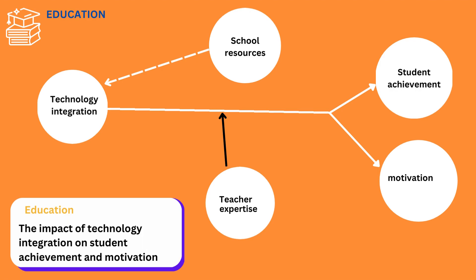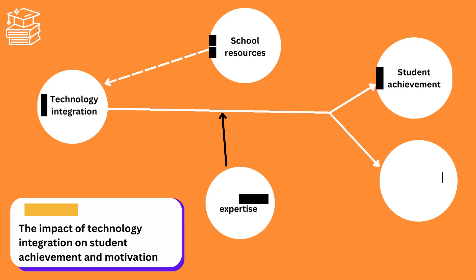In this educational study, we investigate the influence of technology integration on student success and motivation, taking into account the moderating effect of teacher expertise, and controlling for school resources. The independent variable, technology integration, has a direct impact on student achievement and motivation. Teacher expertise moderates the relationship between technology integration and the dependent variables, while school resources act as a control variable, potentially influencing technology integration.